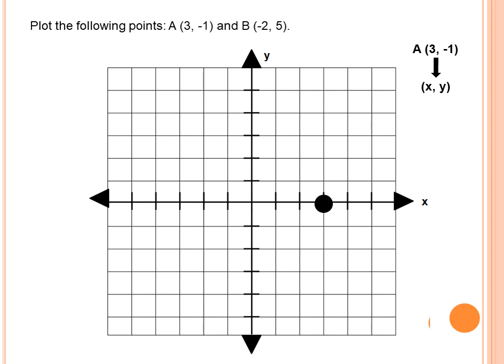From that point on the x-axis, now for the y-coordinate: since the y-coordinate is negative 1, negative numbers on the y-axis are below 0. So we find negative 1 below 0, and that is our point A at (3, negative 1).